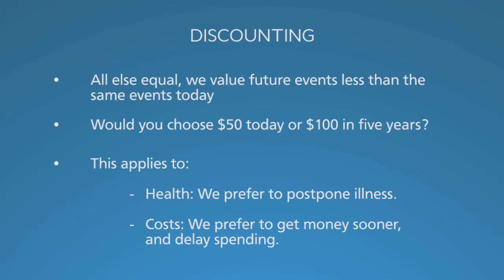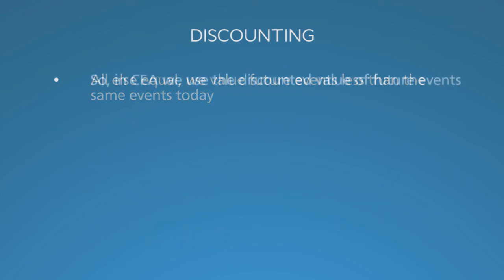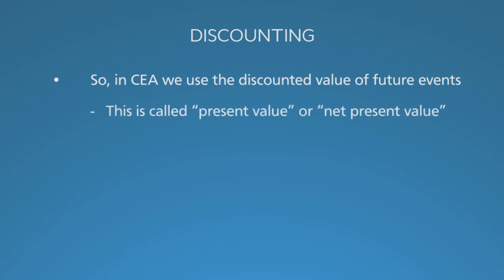In general, we prefer to delay illness. Of course, you can come up with situations where it's more convenient in your life to be sick now rather than later, as if you could control that. But aside from those considerations, we want to push off negative health events. We have similar attitudes about costs — we prefer to receive money as soon as possible and to delay spending as long as possible. Thus, in cost-effectiveness analysis, we use the discounted value of future events. We call this present value.